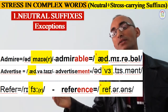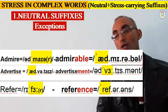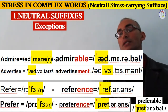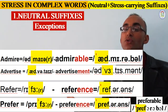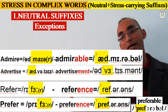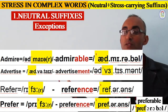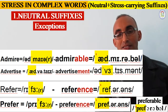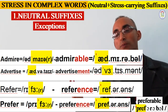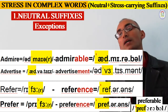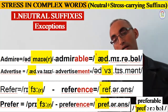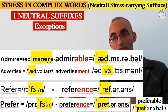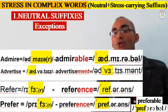Also 'preferable' — the suffix '-able' is present, but the verb is 'prefer' with the second syllable stressed, whereas in 'preferable' the first syllable 'PREF-' is stressed. These four words represent exceptions to the rule for neutral suffixes.